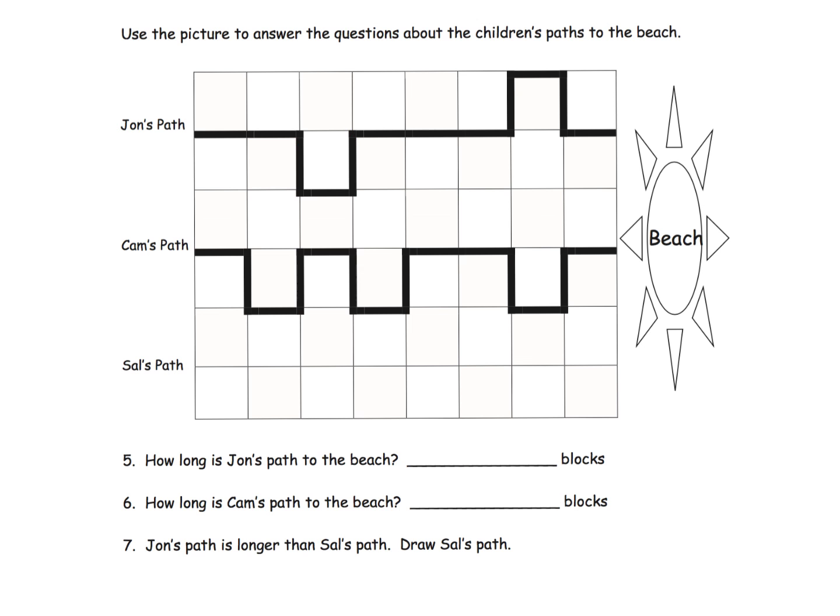Here's a cool thing. It says use the picture to answer the questions about the children's paths. How long is John's path to the beach? The idea is we want to help students count their blocks: 1, 2, 3, 4, 5, 6, 7, 8, 9, 10, 11, 12. So John's path is 12 blocks.